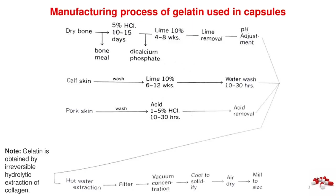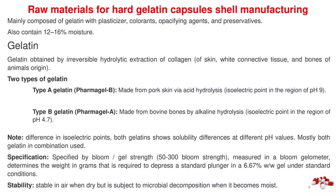Two manufacturing processes of gelatin are used in capsules. Note: gelatin is obtained by irreversible hydrolytic extraction of collagen. Raw materials for hard gelatin capsule shell manufacturing are mainly composed of gelatin with plasticizers, colorants, opacifying agents, and preservatives.